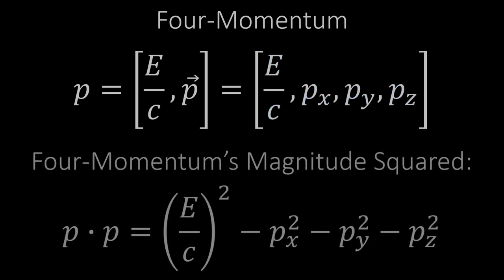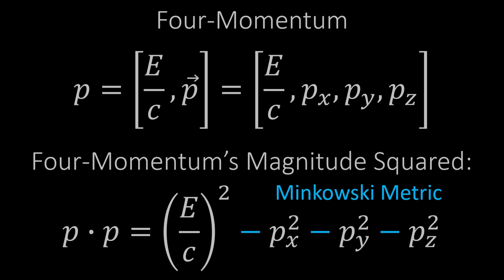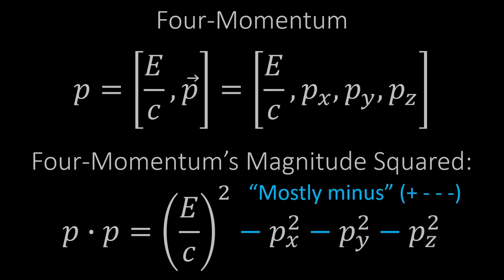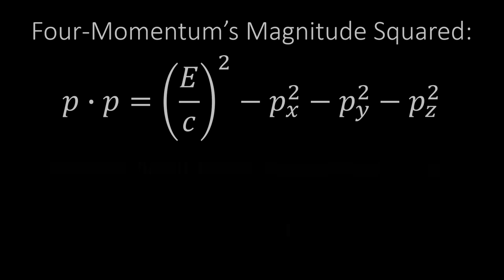The second thing: when you calculate the magnitude squared of the four-momentum, you take the energy term squared and subtract the momentum terms squared. Normally, for a Euclidean four-dimensional vector, you'd take the dot product with itself and all terms add. But in relativity we use the Minkowski metric, where energy adds to the magnitude squared while momentum subtracts from it. I'm using the mostly-minus convention here — one plus and three minuses. Some people use the mostly-plus convention, where energy is negative and momentum is positive. Either way, the physics is the same; what matters is that energy and momentum have opposite signs relative to one another.